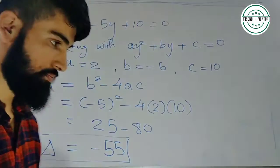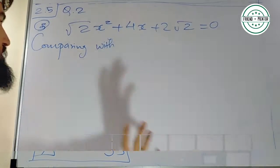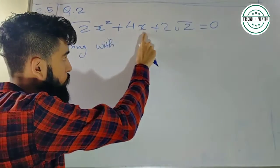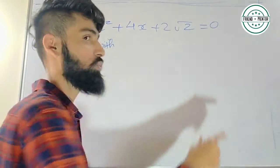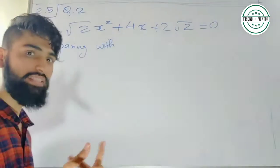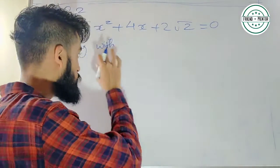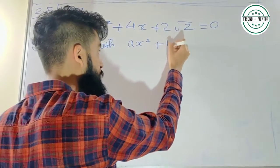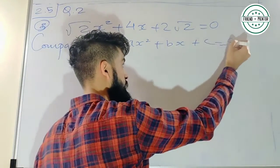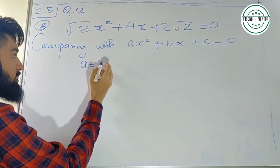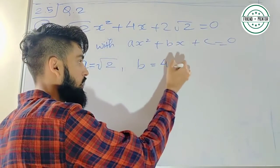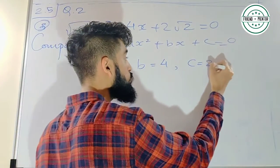Let's see question number 3: √2 x² + 4x + 2√2 = 0. हमें पहले a, b, c चाहिए, so comparing this with ax² + bx + c = 0. What is value of a — x² के साथ root 2 है, so a = root 2. b का value है 4, c का value है 2 root 2.